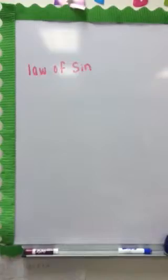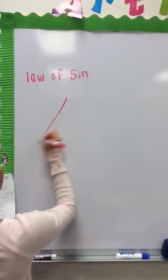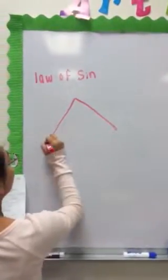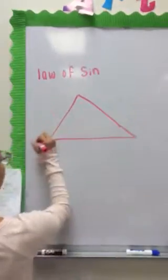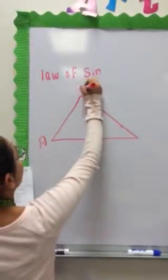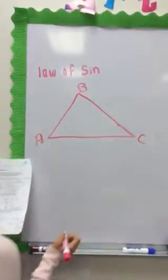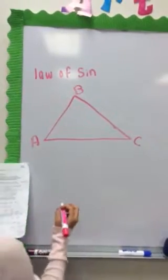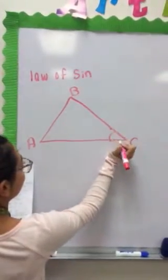In the problem, it reads triangle ABC. Angle C equals 47—I mean A, angle A.